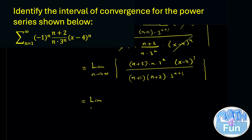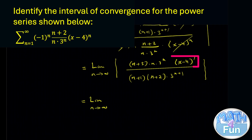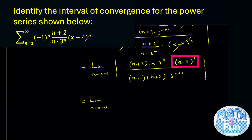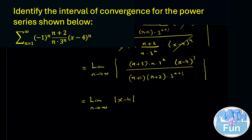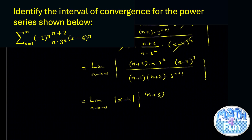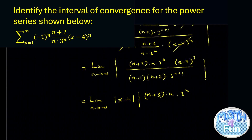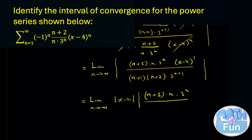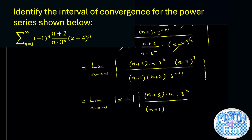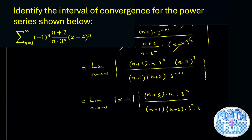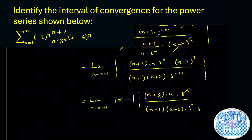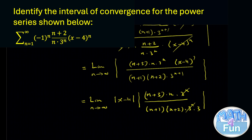It's going to equal the limit as n approaches infinity. We take x minus 4 outside with absolute value. Then simplify: 3 to the power n plus 1 equals 3 to the power n times 3, so 3 to the power n cancels, and we take 3 outside the absolute value, combining it with x minus 4.